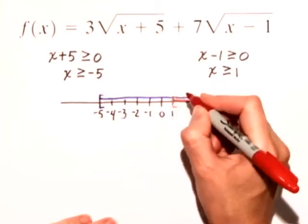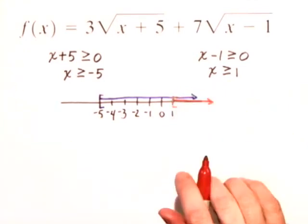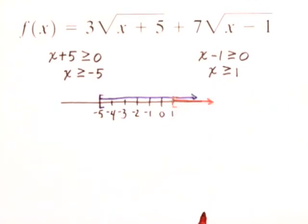So how do we write the domain for this function f(x)? We need to choose the values that are common to both domains. It's really going to be the intersection of these two domains.